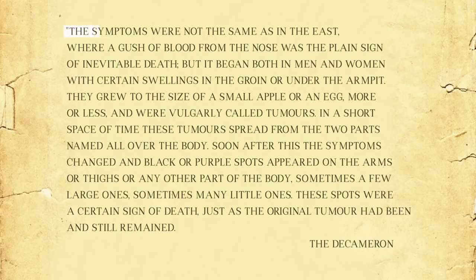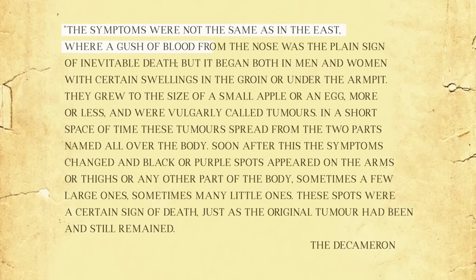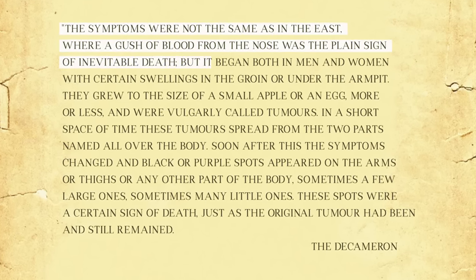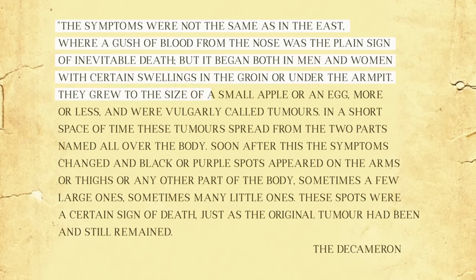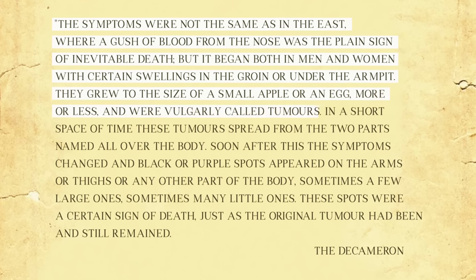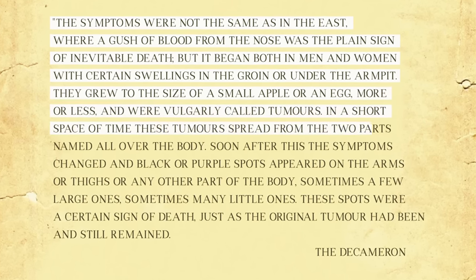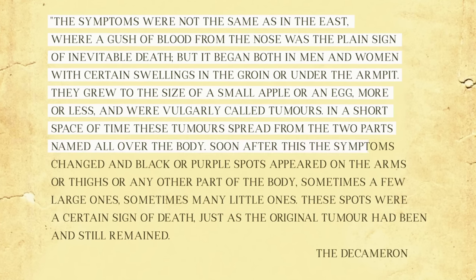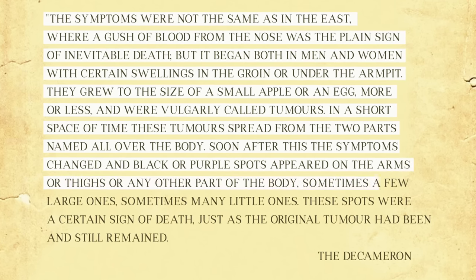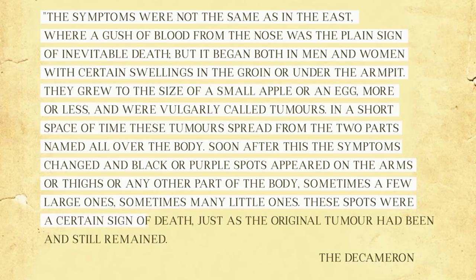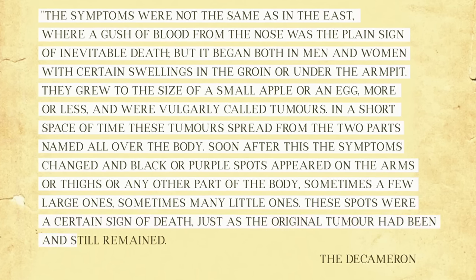Whenever the Black Death showed up in a town, the results were devastating. The most famous account came from Giovanni Boccaccio in his book The Decameron. He wrote: "The symptoms were not the same as in the East, where a gush of blood from the nose was the plain sign of inevitable death. But it began both in men and women with certain swellings in the groin or under the armpit. They grew to the size of a small apple or an egg, and were vulgarly called tumors. In a short space of time, these tumors spread all over the body. Soon after, black and purple spots appeared on the arms, or thighs, or any other part of the body — sometimes a few large ones, sometimes many little ones. These spots were a certain sign of death, just as the original tumor had been."